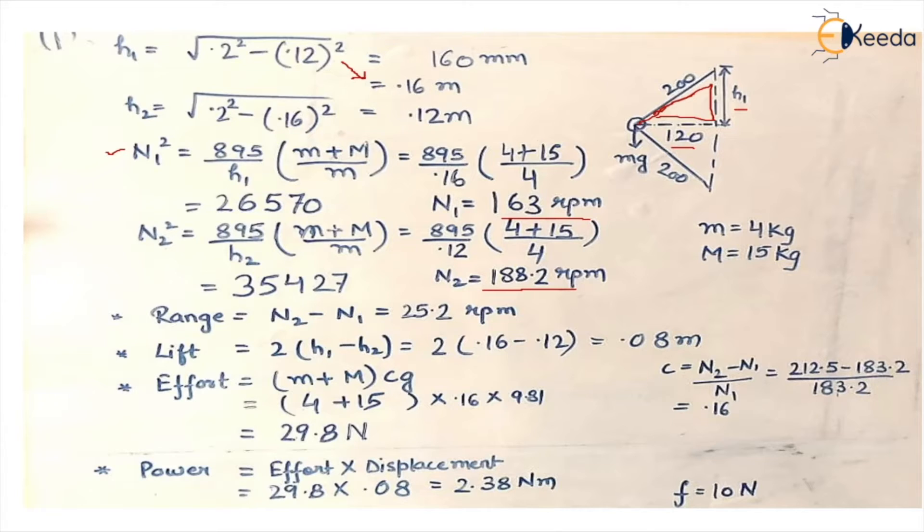Now what is c? c is a factor with which the speed changes and the formula is n2 minus n1 upon n1.